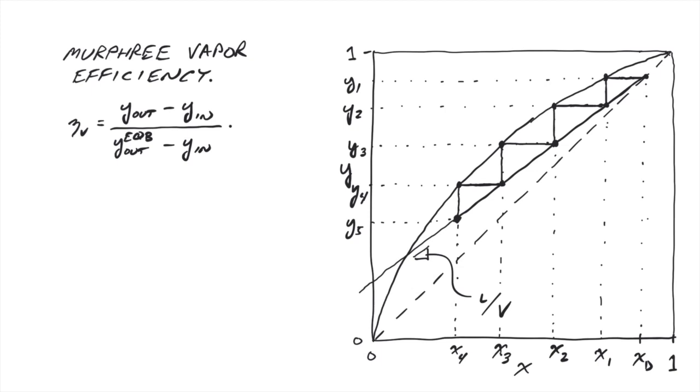Here, y_in and y_out are the vapor concentrations entering and leaving the particular stage in question, and y_out equilibrium is the vapor concentration the stage would produce if the gas exiting left in equilibrium with the actual liquid leaving the stage at concentration x_out.